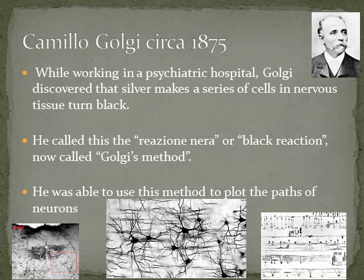Camillo Golgi, circa 1875, was an Italian psychiatrist. While working in a hospital, he accidentally discovered that silver causes certain cells in nervous tissue to stain in a specific way. He called this the Reazione Nera, or the Black Reaction, now known as Golgi's method. He was able to use this method to plot the paths of neurons. He would stain nervous tissue, and the stain would start at the body of the neuron around the axon and travel up the dendrites — allowing him to trace where an impulse would travel in live tissue.